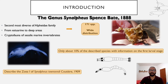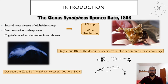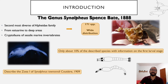However, only about 10% of the described species have information on their first larval stage. To address this scarcity, the aim of the present study is to describe the first zoea of Synalpheus downsi.